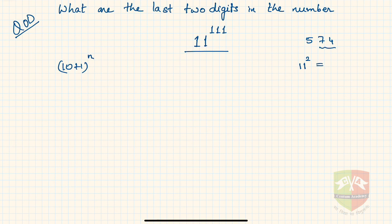11 squared is 121 so last two digits is 21. 11 to the power 3 is 1331 so last two digits are 3 and 1. So likewise we have to find out what is 11 to the power 111 last two digits.